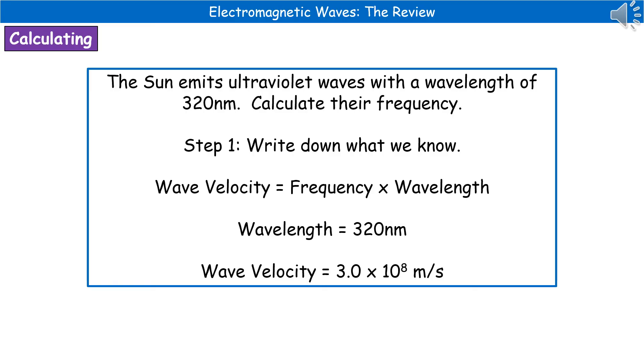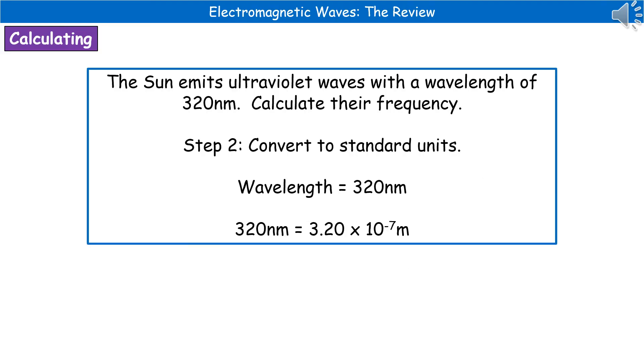Write down your equation that hopefully you've already learnt, write down the wavelength they've given us there of 320 nanometers, and write down the wave velocity, which hopefully you've retained as 3.0 times 10 to the power of 8 meters per second. Second thing we need to do is we need to convert to our standard units. Nanometers are not the standard units of wavelength, remember. That should be in meters. So when we convert our 320 nanometers into meters, we end up with 3.20 times 10 to the power minus 7 meters.